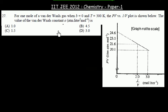Now this problem is from gas law. The question says: 1 mole of Van der Waals gas when B is equal to 0 and temperature is 300 K, the PV versus 1/V plot is shown below. The value of Van der Waals constant A is? So we have to find what is the value of Van der Waals constant A.